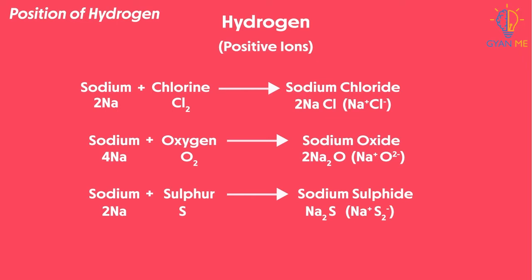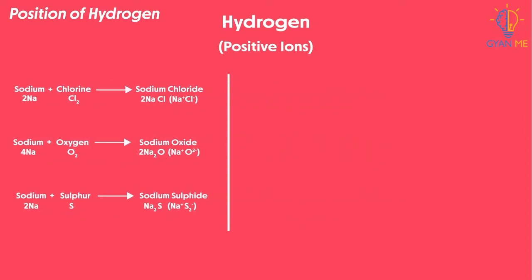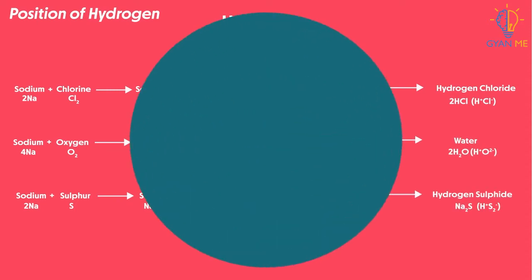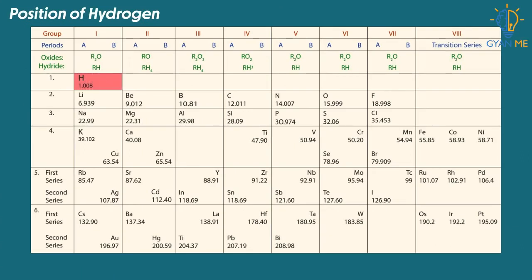Observe that each of these compounds has plus one valency of sodium. Even hydrogen forms similar kind of compounds, that is hydrogen chloride with chlorine, hydrogen oxide with oxygen, that is water, and hydrogen sulfide with sulfur. This means hydrogen should be placed with group 1 element, right? But wait for a second.